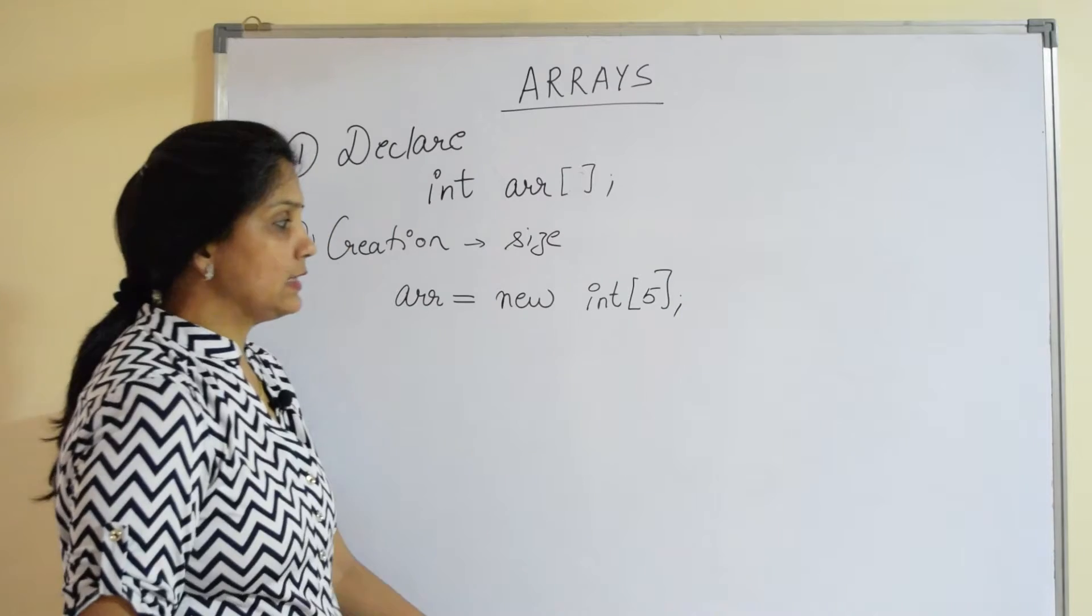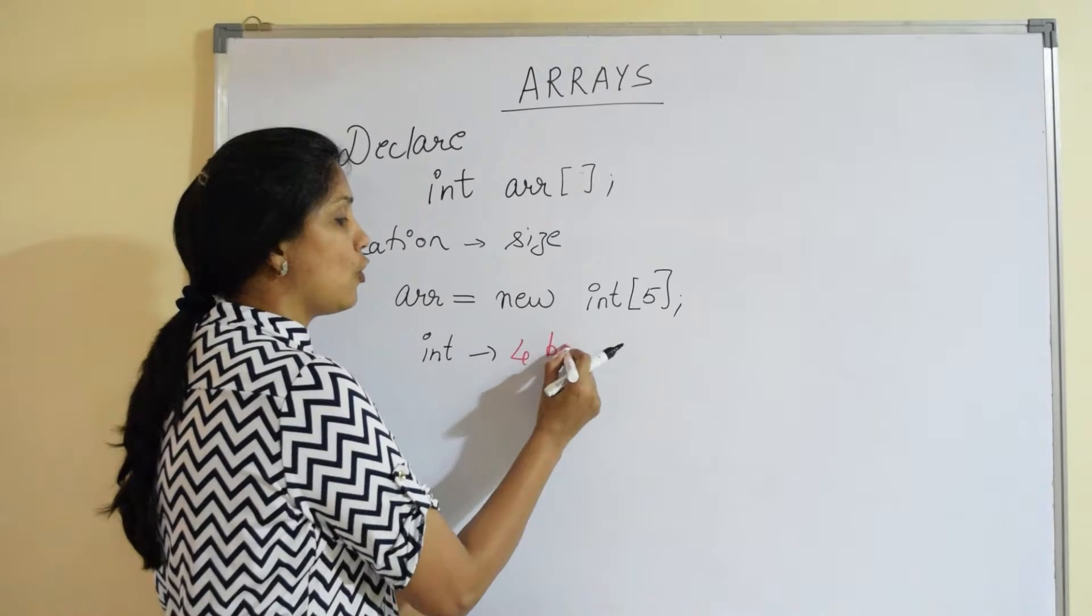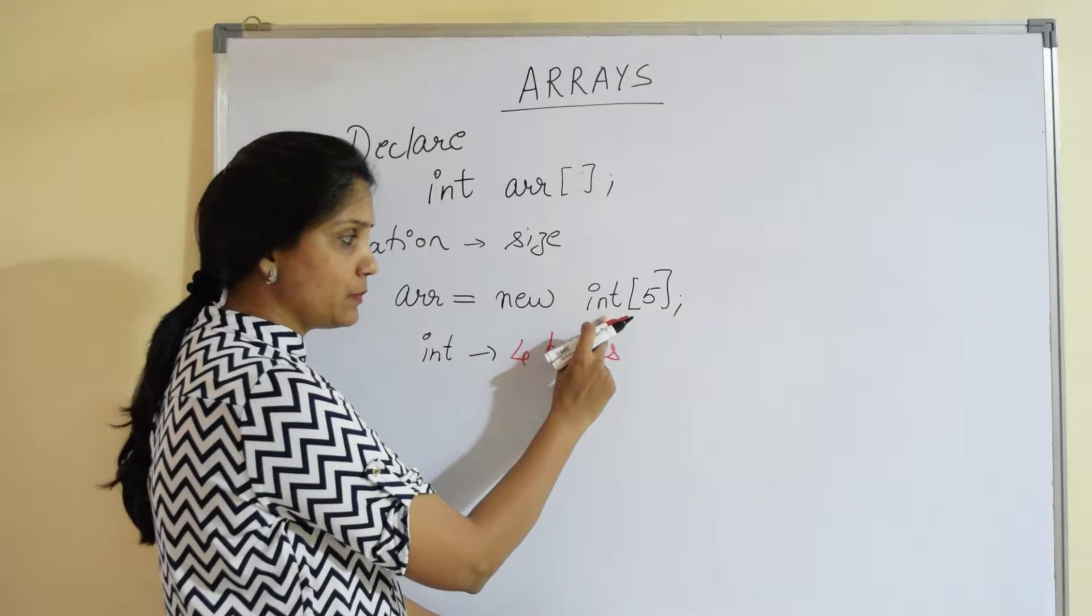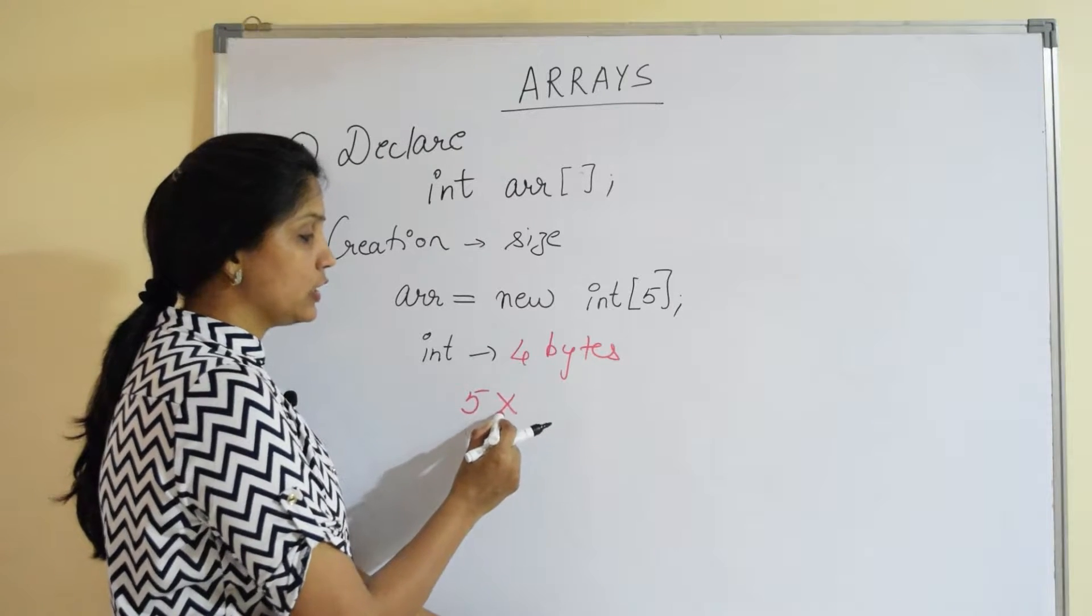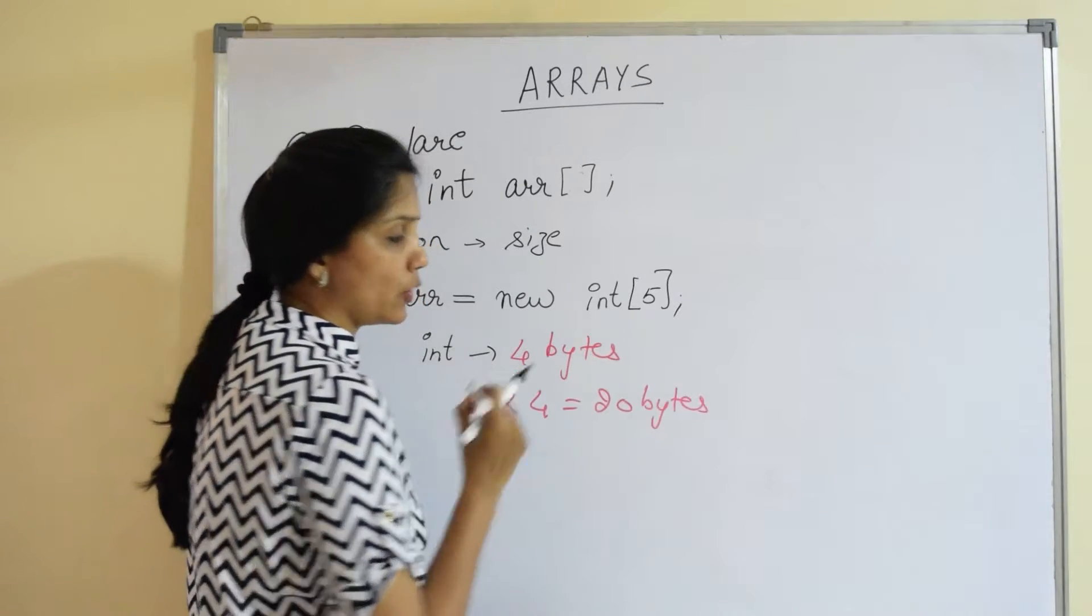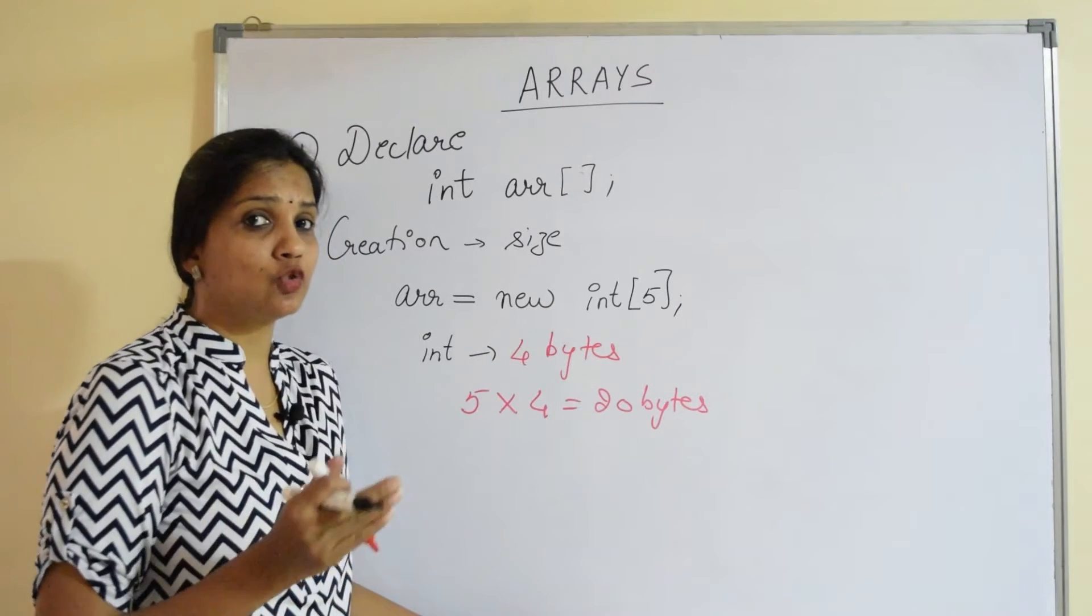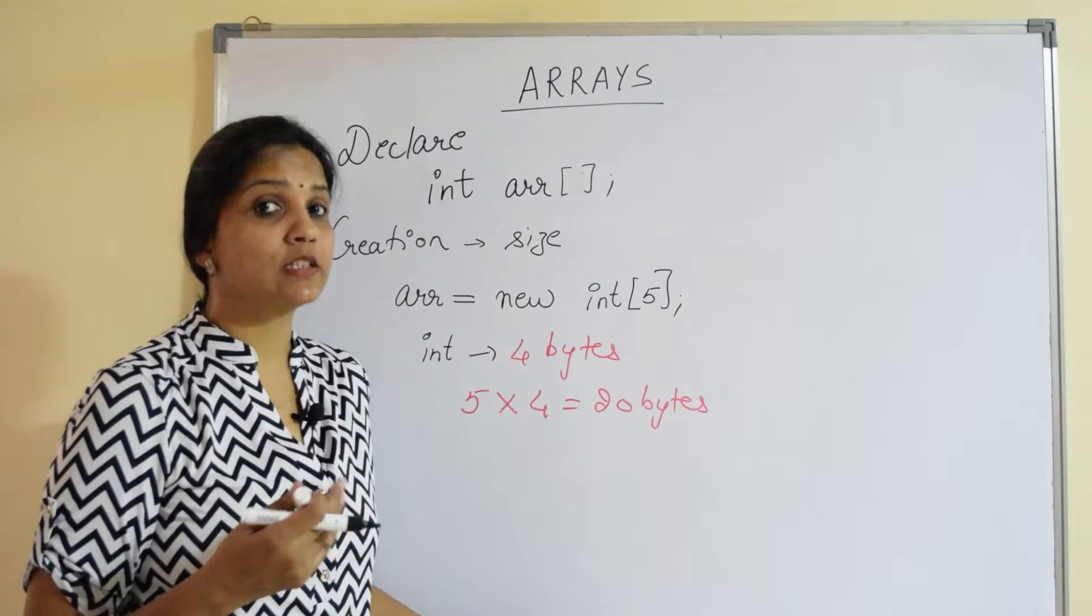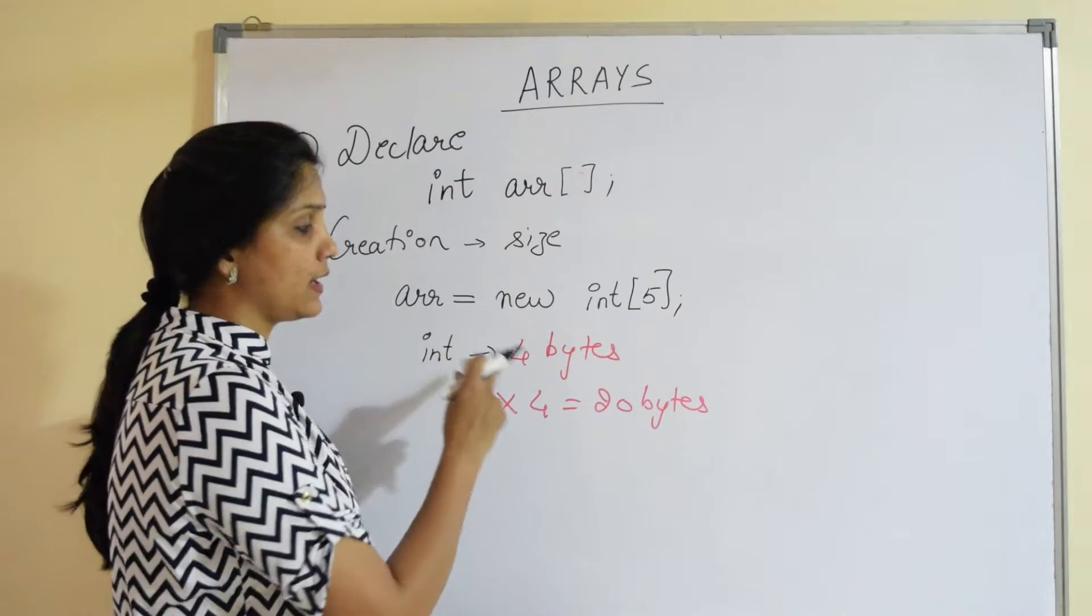One more important thing is we know that int as a data type stores or occupies four bytes of memory. In an array, I am storing five values of integer type. So the total memory occupied by this array is five values into the size of each value, that is four, that is 20 bytes of memory. If it was char, char requires two bytes, five into two is 10. If it was long, long requires eight bytes, eight into five, that is 40 bytes. That is how the size or the memory required for an array is calculated.